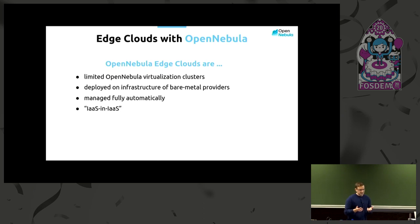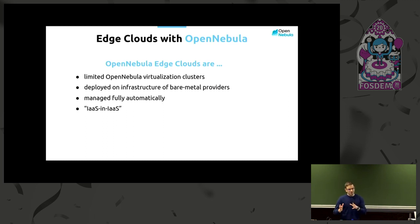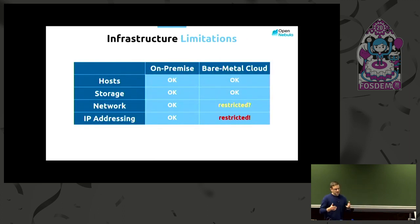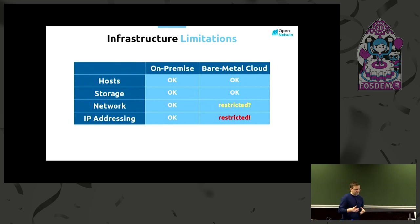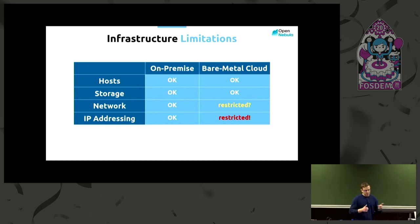To summarize, OpenNebula edge clouds are just limited OpenNebula virtualization clusters, like those you might already be running on premises. They are deployed on third-party infrastructure and managed fully automatically. I've introduced the buzzword 'infrastructure-as-a-service in infrastructure-as-a-service,' because when running a virtualization cluster on premises, everything is okay — you have hosts under full control, storage, network, and you choose your addresses. But if you deploy a similar virtualization cluster on third-party infrastructure, hosts and storage are probably okay, but networking can be more restricted.